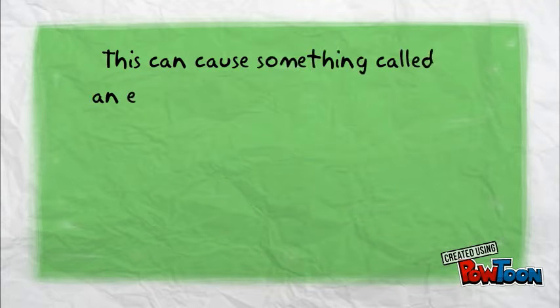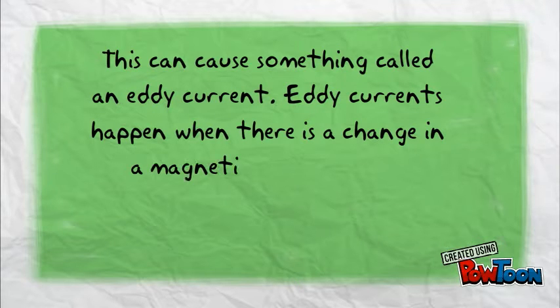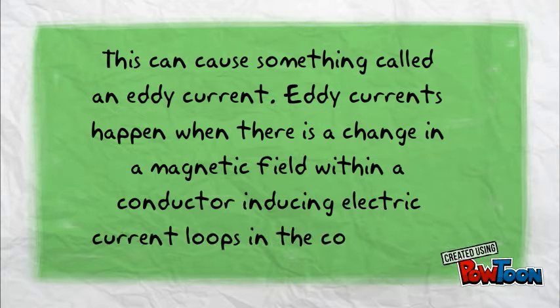This can cause something called an eddy current. Eddy currents happen when there is a change in a magnetic field within a conductor, inducing electric current loops in the conductor.